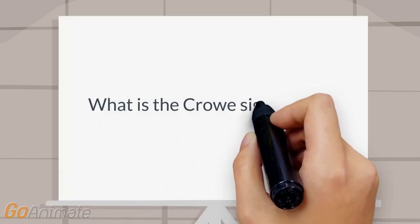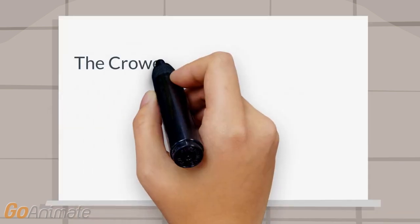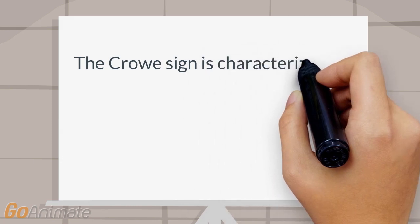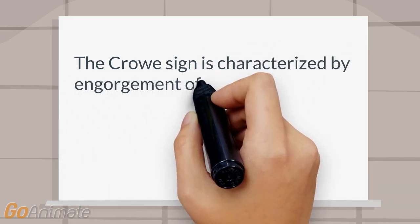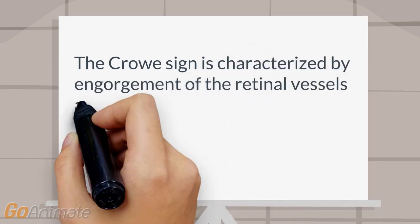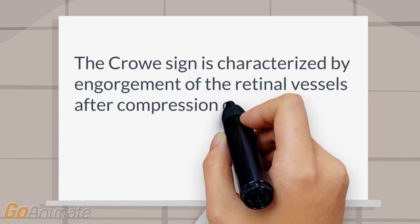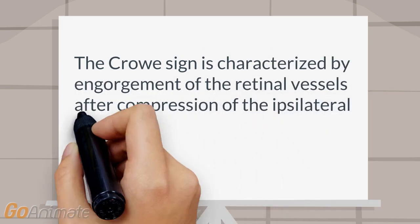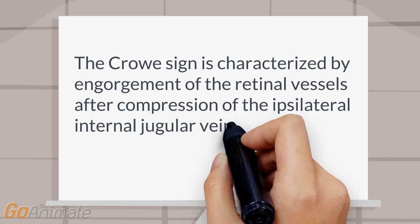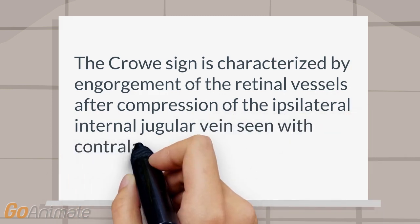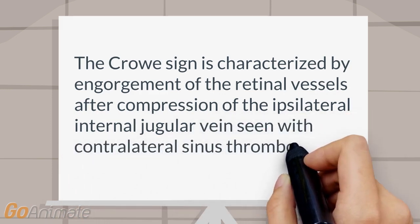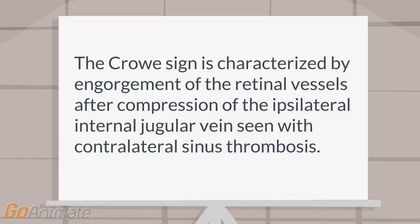What is the Cro-Sign? The Cro-Sign is characterized by engorgement of the retinal vessels after compression of the ipsilateral internal jugular vein, seen with contralateral sinus thrombosis.